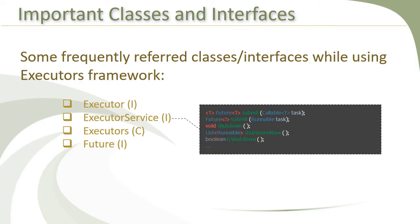The last three methods shown here cater to the destruction phase of the ExecutorService. With the shutdown method, you can instruct the service to shut itself down. After this method is called, no new task can be submitted to the service for running. Whatever tasks are currently being executed will keep running till completed, and whatever tasks are pending will also still be executed. Only new tasks will not be accepted.